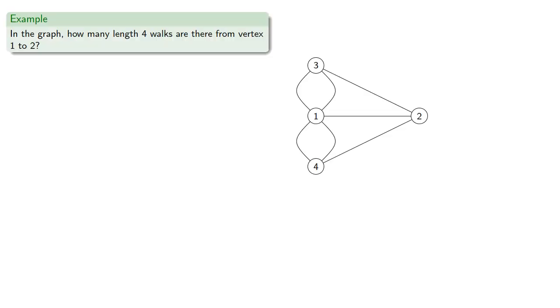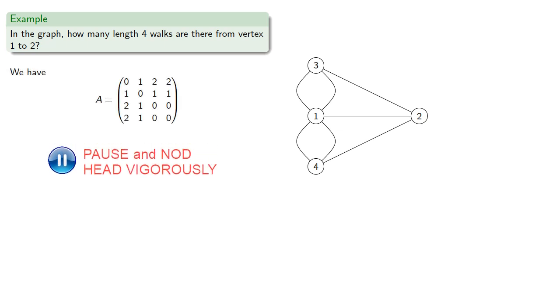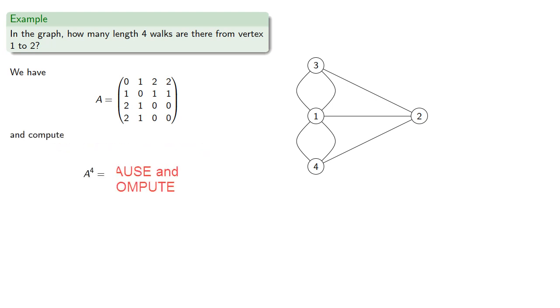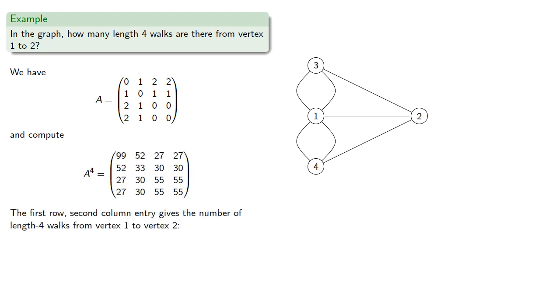So again, in the graph corresponding to the Königsberg bridge problem, we can find the number of length 4 walks from vertex 1 to vertex 2. We have our adjacency matrix, and we compute A to the 4. The first row, second column entry gives the number of length 4 walks from vertex 1 to vertex 2, and we find there are 52 such walks.